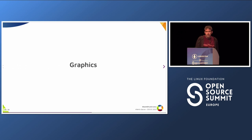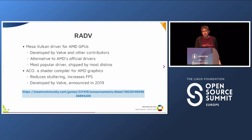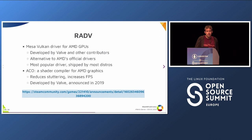After the kernel, let's talk about graphics — a very important part for a gaming machine. One of the key components is RADV, the Mesa Vulkan driver for AMD GPUs. It's developed by Valve and other contributors, and it's the most popular AMD driver because it's shipped with Mesa, it's open source, and it comes with most distros. Related work is ACO, a shader compiler for AMD graphics, also developed by Valve and announced in 2019. It reduces stuttering and increases FPS in games.